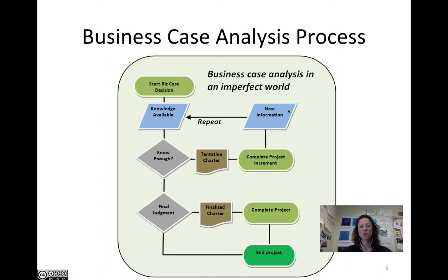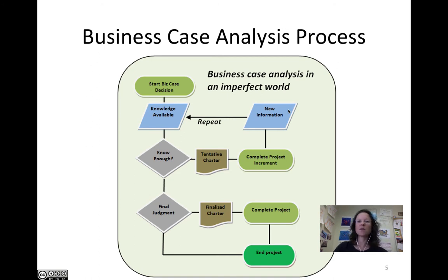The analysis process we have to follow is to start with a preliminary business case decision based on available knowledge and then decide: do we know enough? If yes, we move to the final judgment, finalize the charter, complete and end the project. If not, we create a tentative charter for the next project stage or increment. Every time new information comes in, we add it to available knowledge and make another tentative charter — or, when sufficient information exists, move to a finalized charter and complete the project.